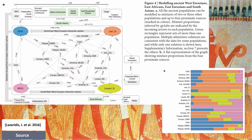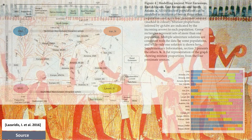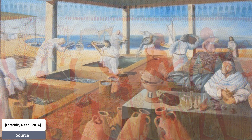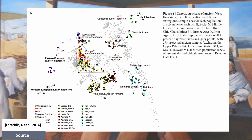Later admixture from populations related to the Chalcolithic people of Western Iran had a wide impact on Levantine Bronze Age populations in the south, as well as on the Chalcolithic Northwest Anatolians in the west. Ancient populations of Chalcolithic Iran and Armenia, Bronze Age Armenia, and Chalcolithic Anatolia were all composed of the same ancestral components, albeit in slightly different proportions.